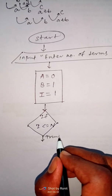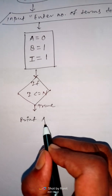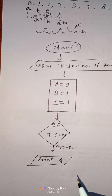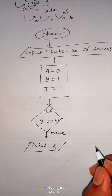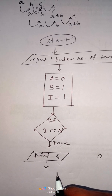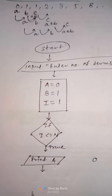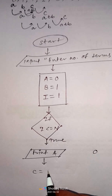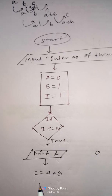Now check the condition: if i ≤ n, and if true, first print a. For the first time, this will print 0. Then we find the third term: c = a + b.